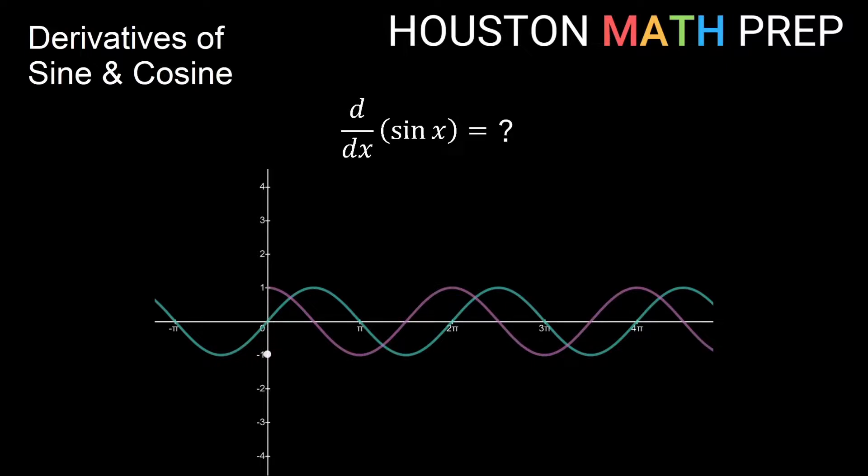So from this we can see that the derivative of sine x is cosine x.